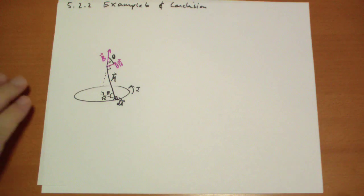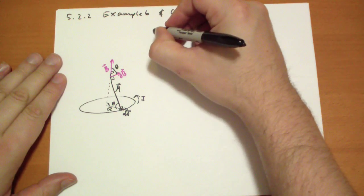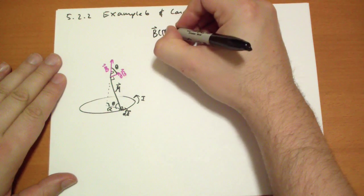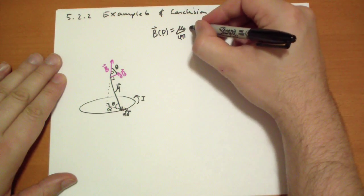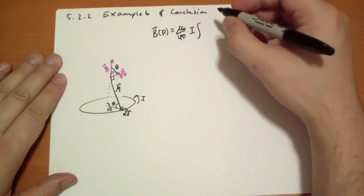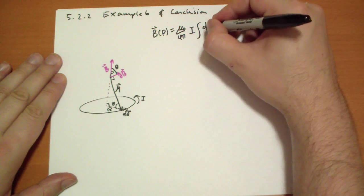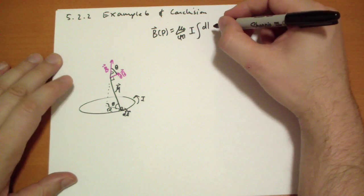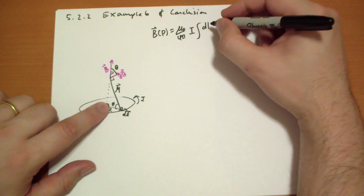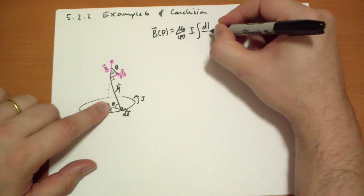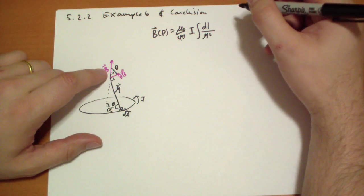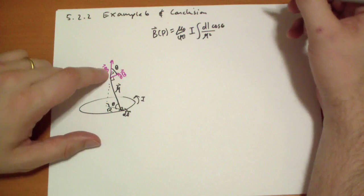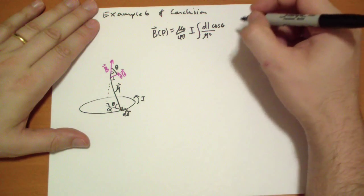So we can just write out our Biot-Savart law for this case. That's mu naught over 4 pi, and we have a constant current integrating across that loop. That's going to be DL cross R hat, but they're perpendicular, so it's just DL over R squared. But only the cosine theta component of that is going to be contributing to the end result, because the horizontal components will cancel out, so we take cosine theta there.